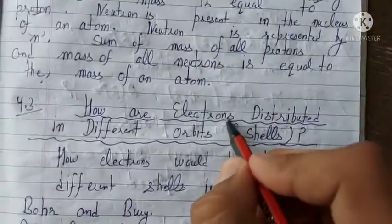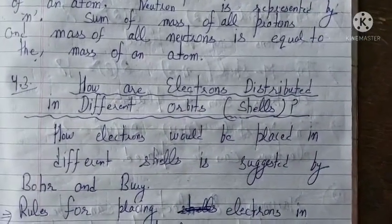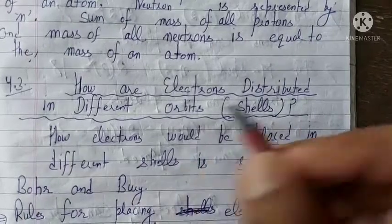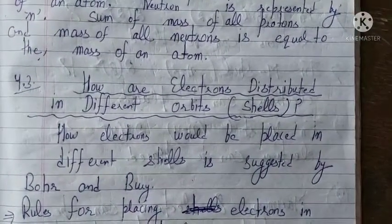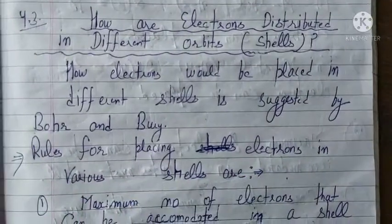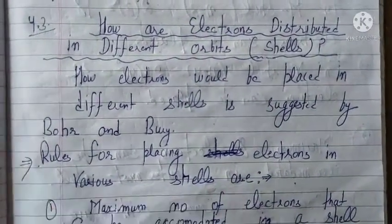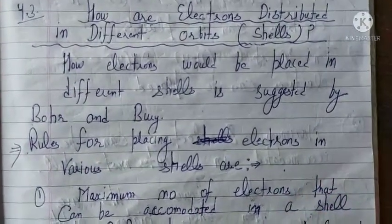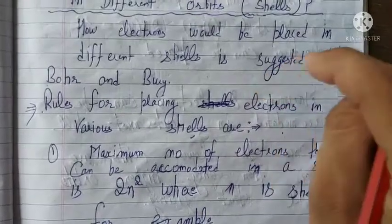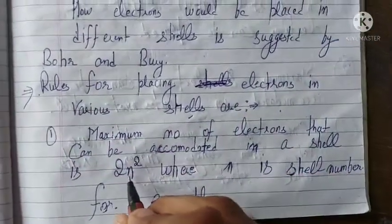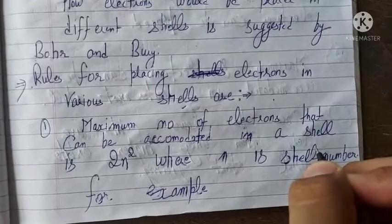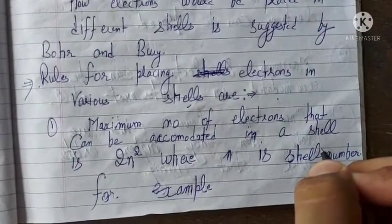How are electrons distributed in different orbits or shells? We know different orbits are possible such as K, L, M, N. This idea was given by two scientists whose names were Bohr and Bury. They gave some rules used nowadays for placing electrons in various shells. The first rule: the maximum number of electrons that can be placed in a shell is 2N², where N is the orbit number — for K it is 1, L is 2, M is 3, N is 4.